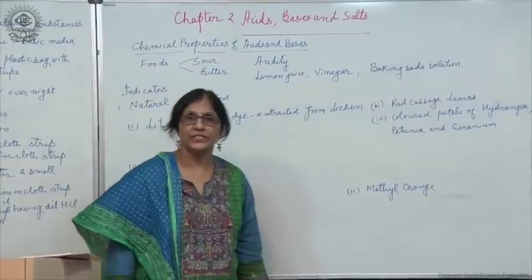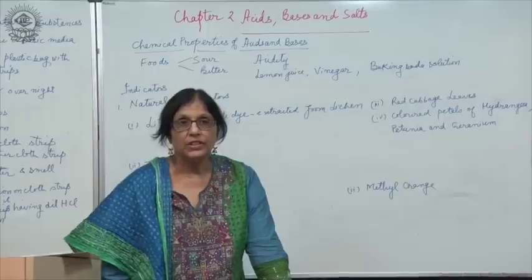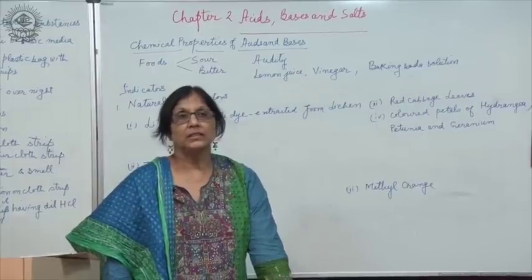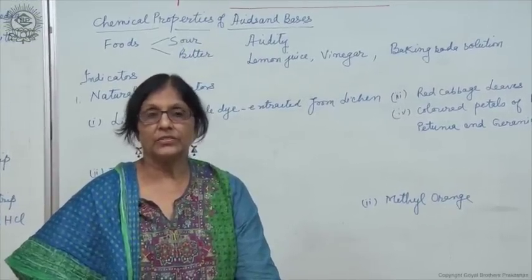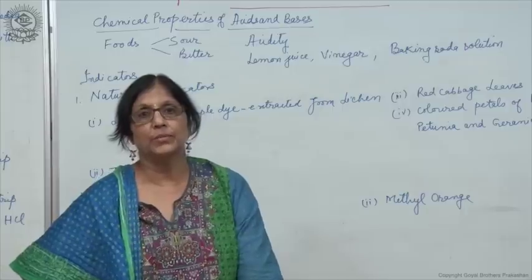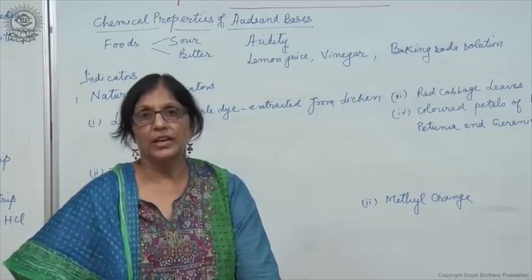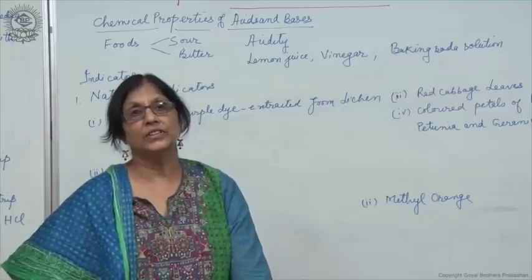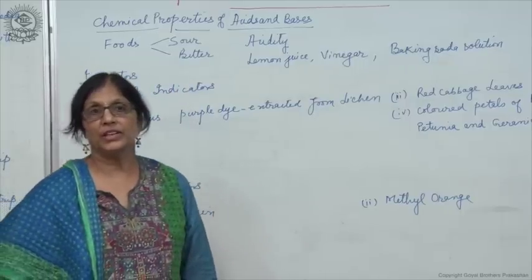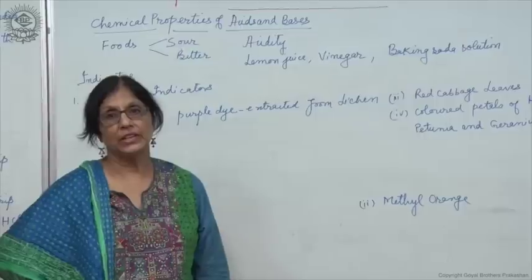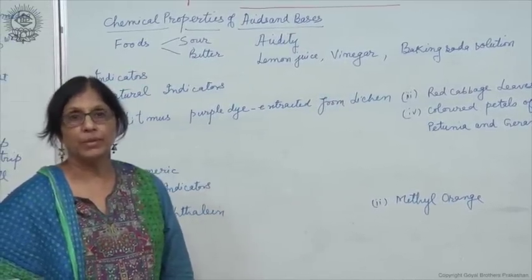How can we test acids and bases? With the help of certain substances called indicators, which tell whether a solution is acidic or basic in nature. There are two types of indicators: natural indicators and synthetic indicators. One very commonly used natural indicator is litmus, which is obtained from lichen. It is a purple-coloured dye.